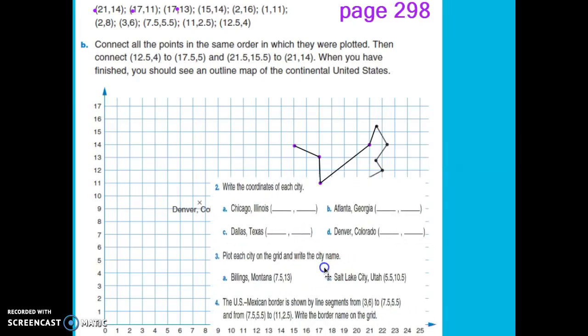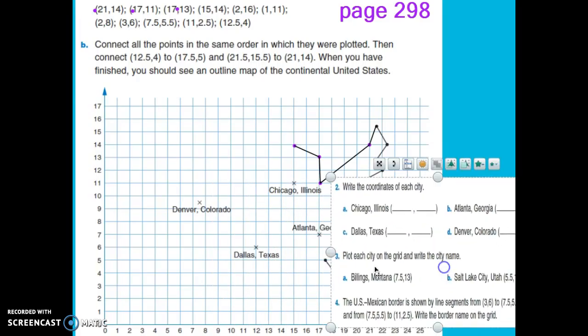You can see that there's some cities marked on the map, and they want to know what the coordinates are for that. So what is the ordered pair for Chicago, Illinois? You'll need to find out where this X is. To get there I have to run 15 and jump 11. Remember to write your running first, your x-axis first, so we ran 15 and we jumped 11.